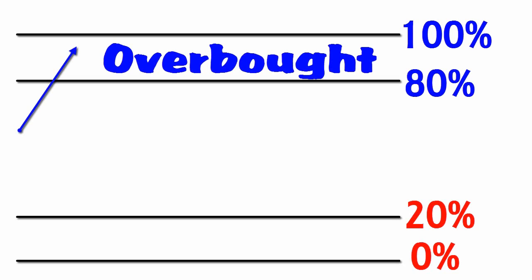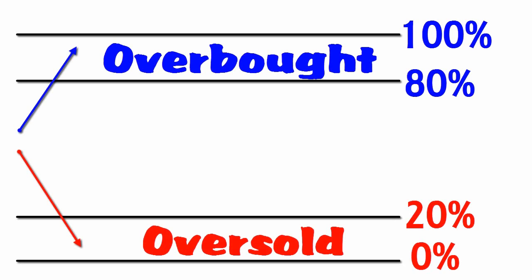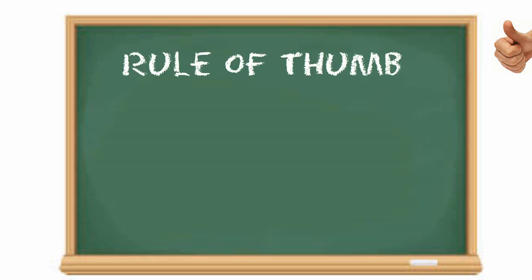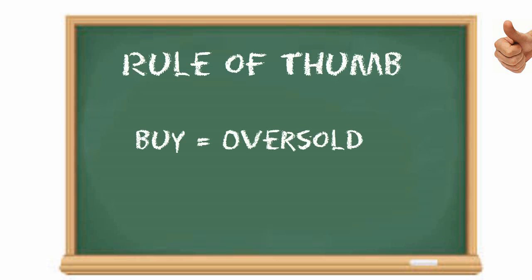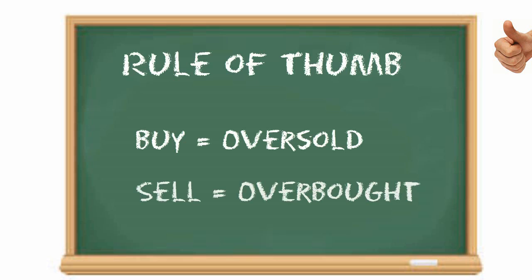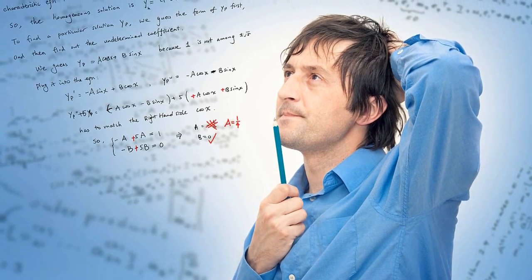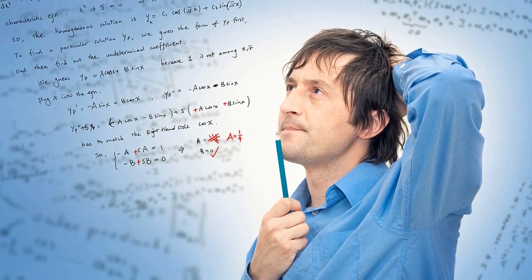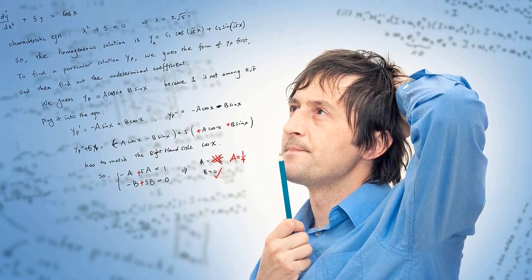Let's simplify: when the stochastic oscillator rises above 80%, the market is overbought, and when it falls below 20%, the market is oversold. Stochastic can thus be seen as strong buying and selling signals respectively. As a rule of thumb, we buy when the market is oversold and sell when the market is overbought. When using stochastic, Forex traders need to take into account that the Forex market, being a 24-hour market, has no closing prices.